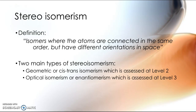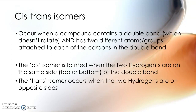Stereoisomers have atoms connected in the same order but with different orientations in space. Cis-trans isomers, which are a type of stereoisomer, occur when a compound has a double bond that will not rotate. A single bond is freely rotatable, but a double bond is fixed. When the two carbons in that double bond each have two different atoms or groups of atoms connected to them, you end up with cis-trans isomers.